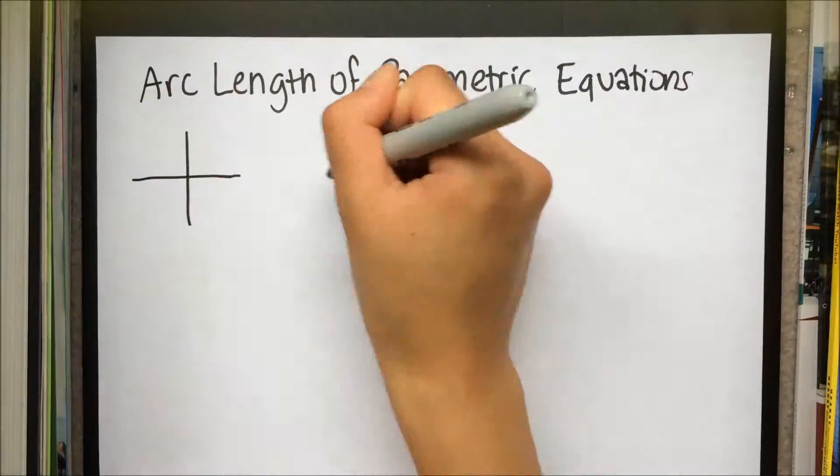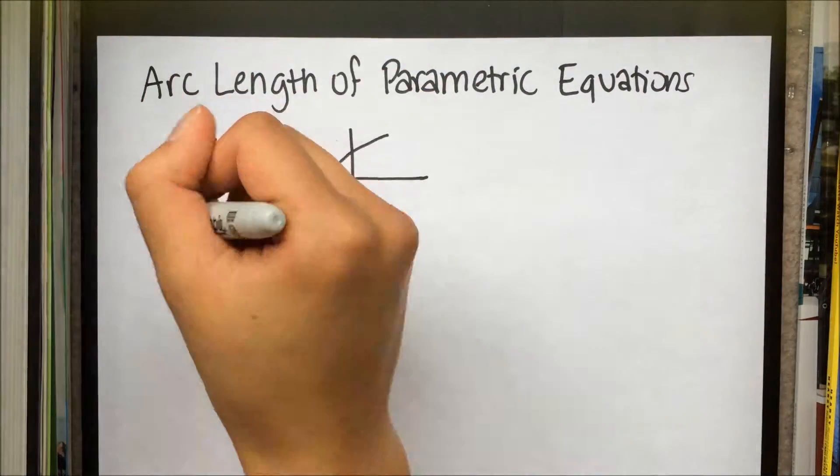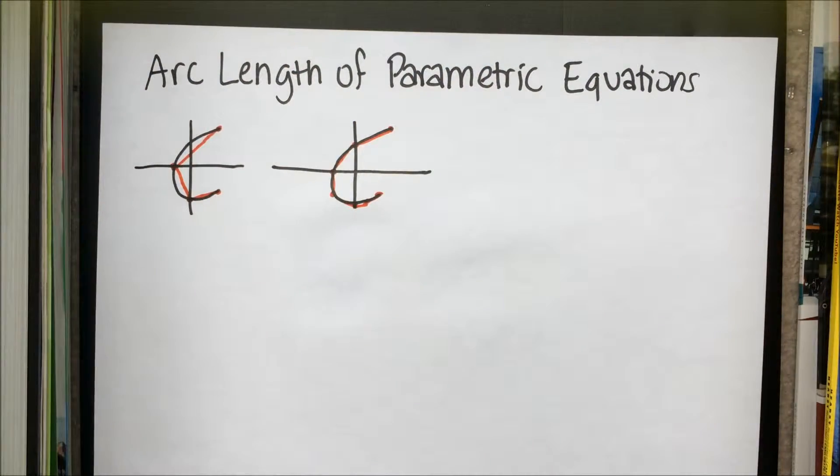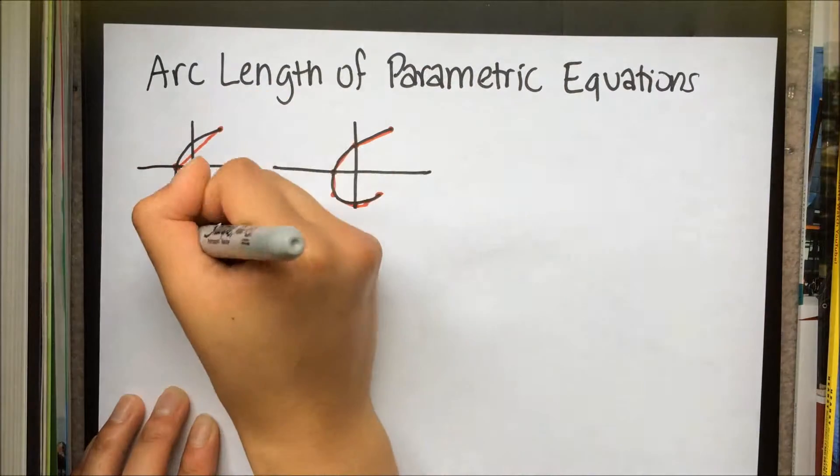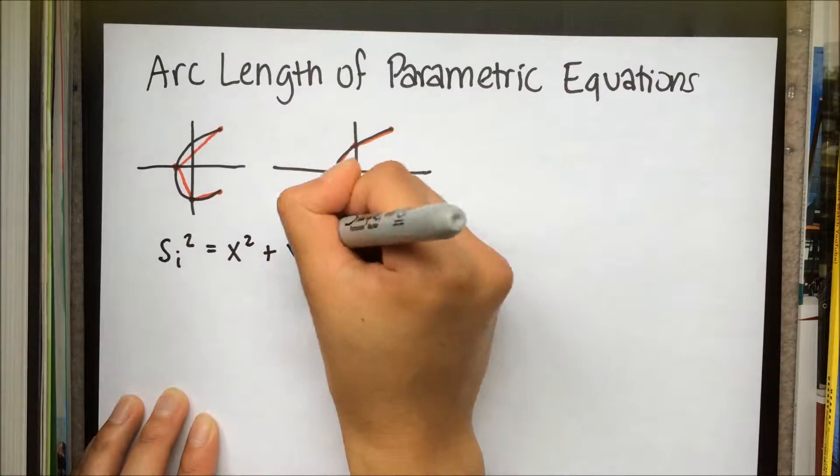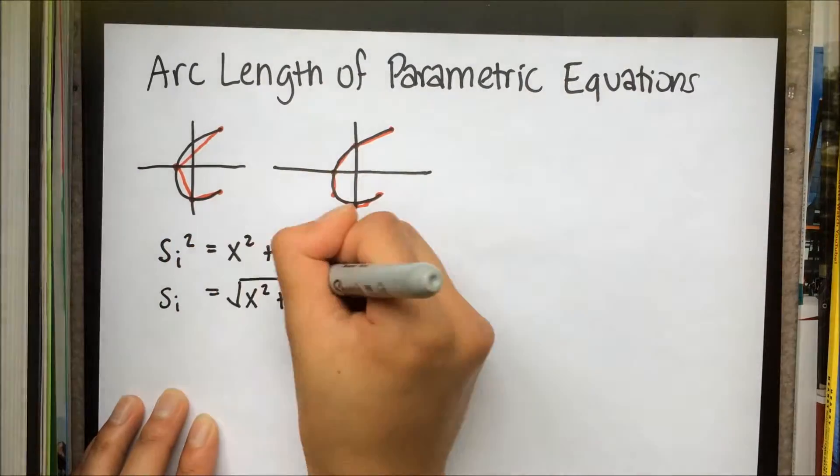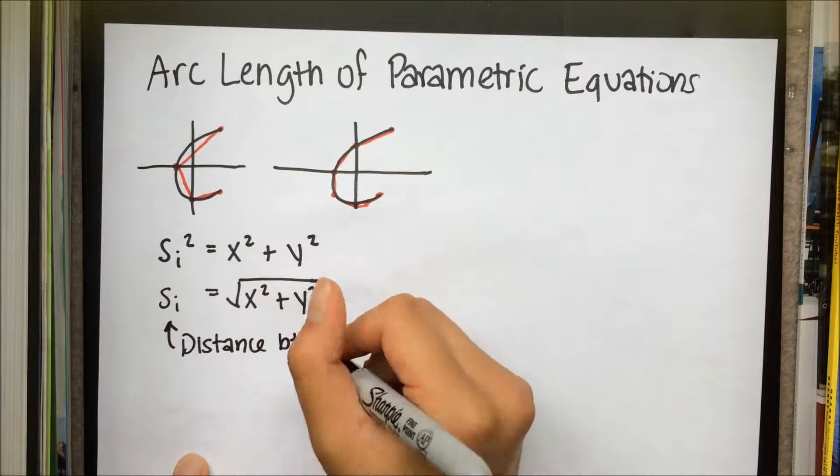The arc length of a parametric equation is the sum of the distances between its points. The distance between each set of points is calculated by using the Pythagorean theorem. The more points on the curve, the more accurate the arc length becomes. Therefore, if we have infinite points, we can get the exact arc length.